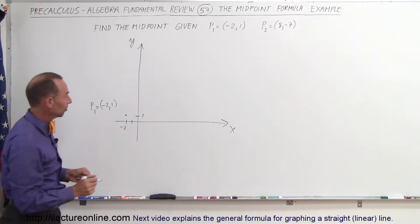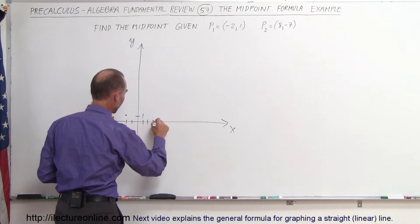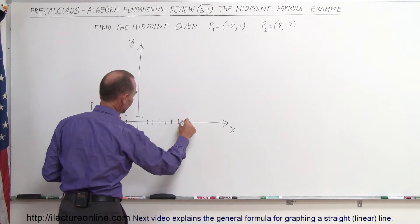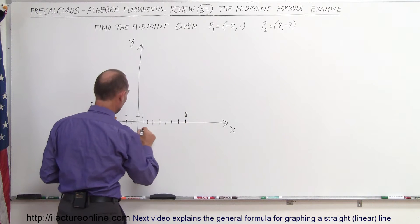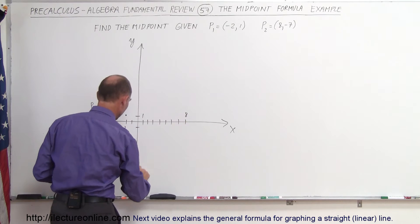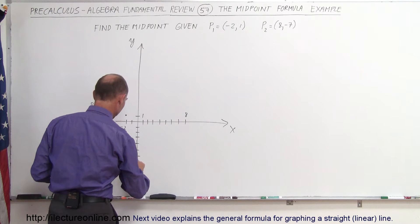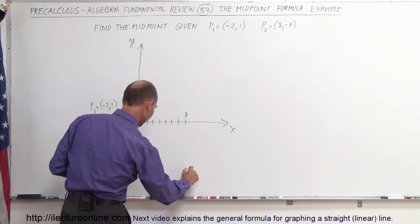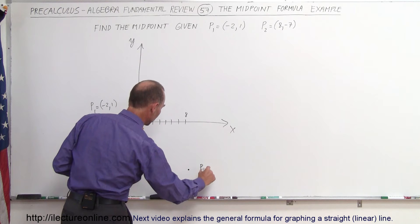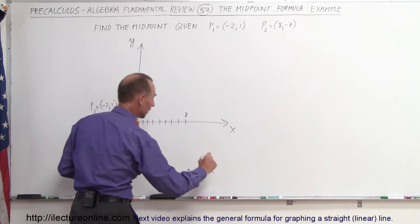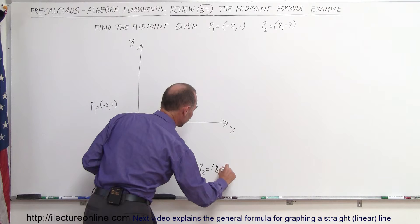Second point, it's (8, -7), so 1, 2, 3, 4, 5, 6, 7, 8. That's the x value. The y value, I need to make this a little longer: 1, 2, 3, 4, 5, 6, 7, minus 7. And where those two meet, that's the second point, point 2, and the coordinates are (8, -7).